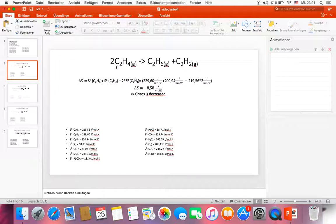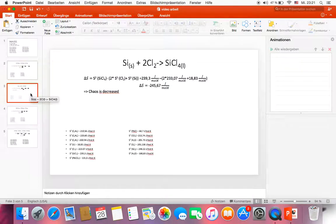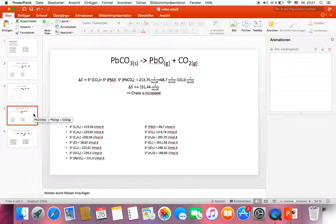We'll do the same way with reactions b, c, and d. In reaction b, delta S is equal to the entropy S of silicon chloride minus two times the entropy S of chlorine minus entropy S of silicon. And it is minus 245.67 joules per mole kelvin. The chaos of this reaction is also decreased, just the same as reaction a. Now we move to reaction c.